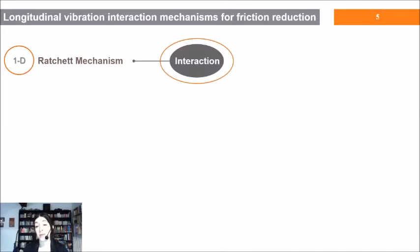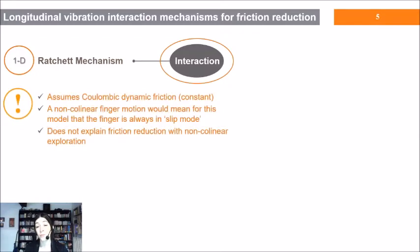The problem with this theory is that it assumes Coulombic dynamic friction. A non-collinear finger motion would mean for this model that the finger is always in slip mode, so it does not explain friction reduction with non-collinear exploration.